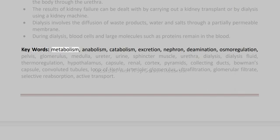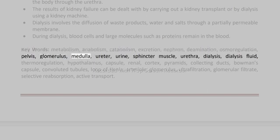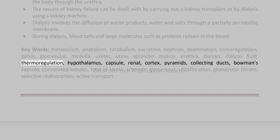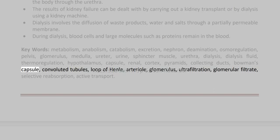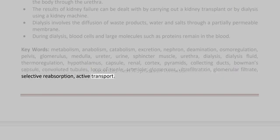Key words: metabolism, anabolism, catabolism, excretion, nephron, deamination, osmoregulation, pelvis, glomerulus, medulla, ureter, urine, sphincter muscle, urethra, dialysis, dialysis fluid, thermoregulation, hypothalamus, capsule, renal, cortex, pyramids, collecting ducts, Bowman's capsule, convoluted tubules, loop of Henle, arteriole, glomerulus, ultrafiltration, glomerular filtrate, selective reabsorption, active transport.